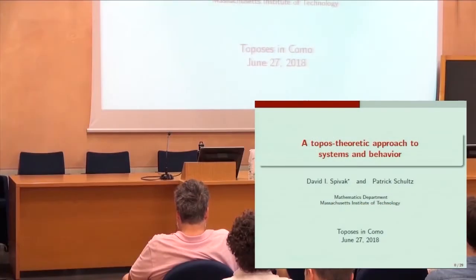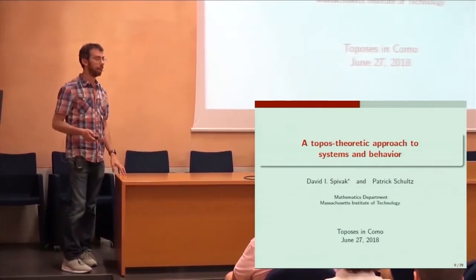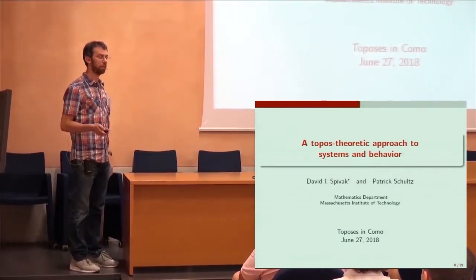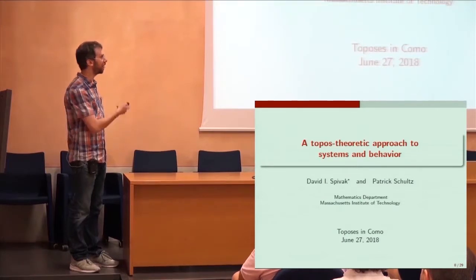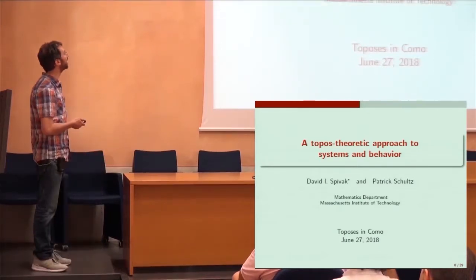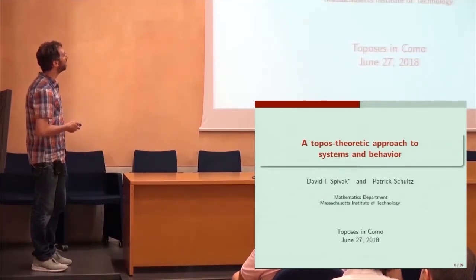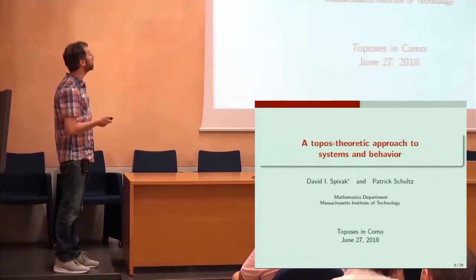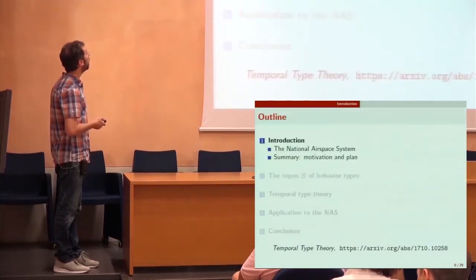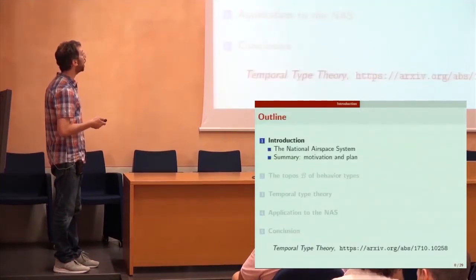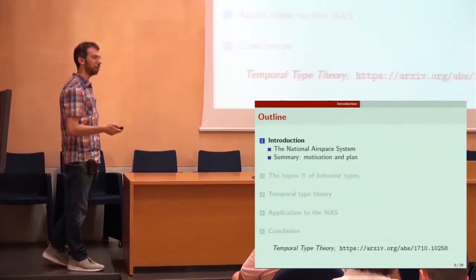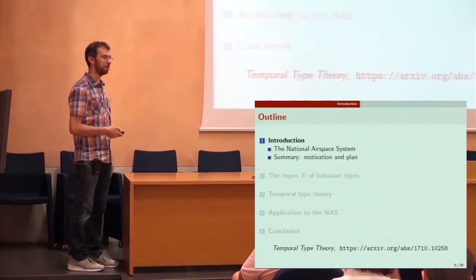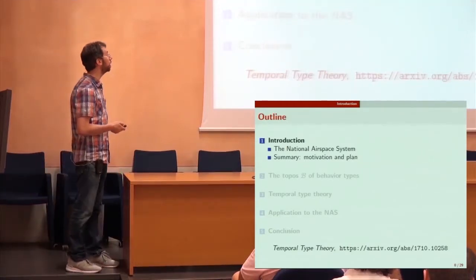This is joint work with Patrick Schultz, and I think it's a testament to topos theory that it can contain both Alan Kahn's talk and this talk in one subject. I'm going to be talking about a specific example, namely the national airspace system, and then I'll be talking about a lot of topos theory that came into a project we did.